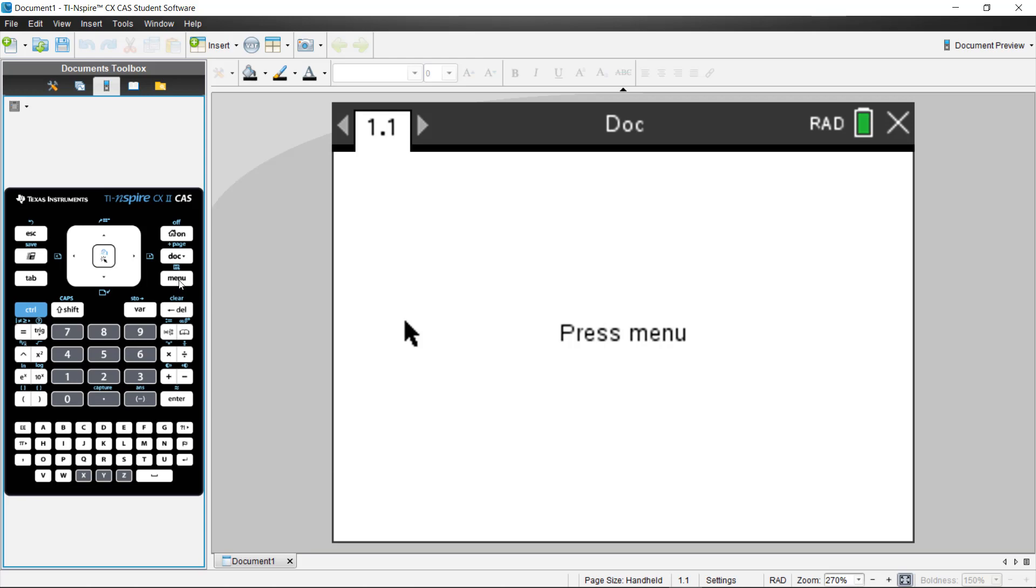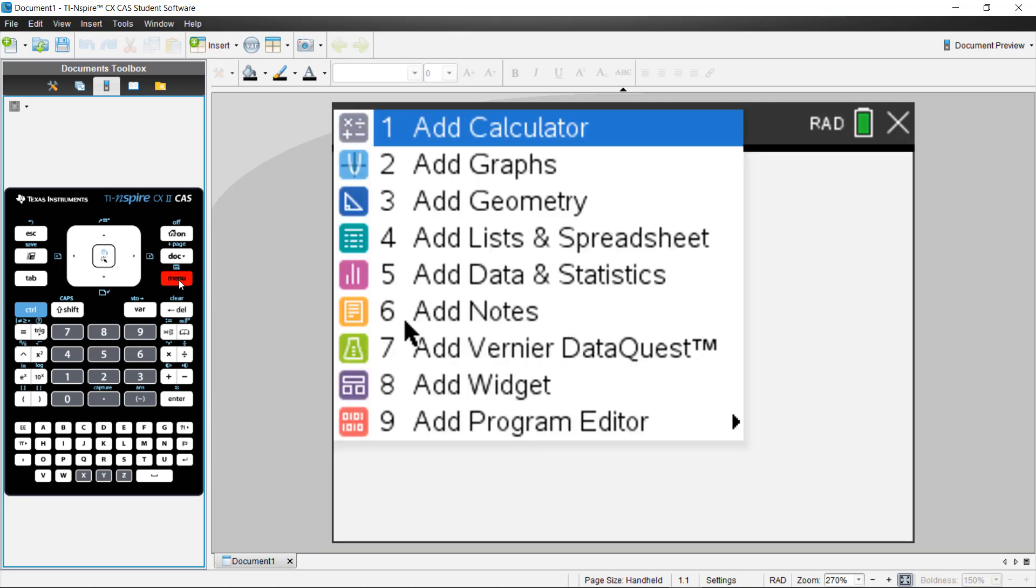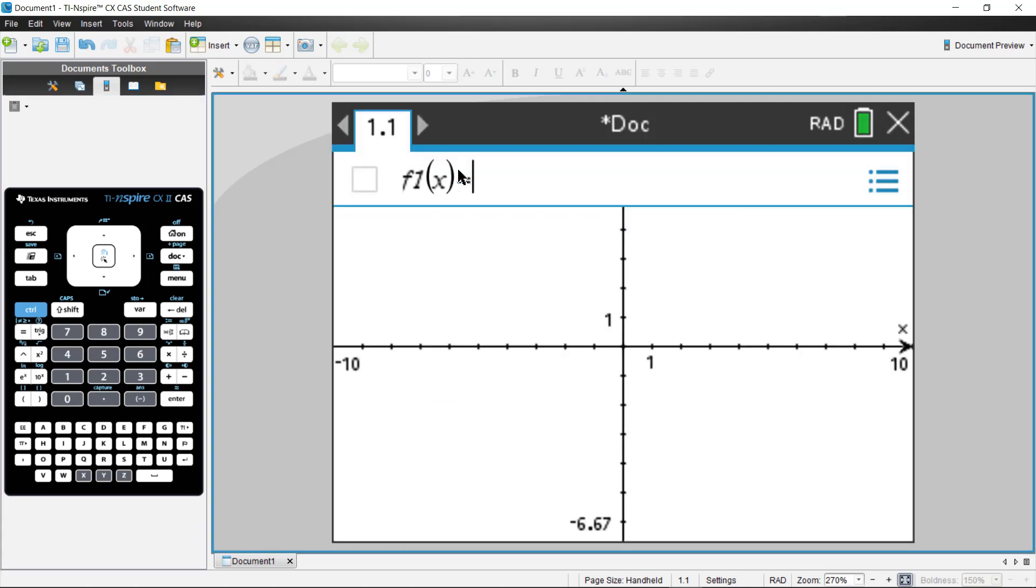Either one will work, but I'm going to use this over here. Selecting option number two gets me a graph, and here I can type in a function, maybe like x squared plus two or something. I can have that put in there.